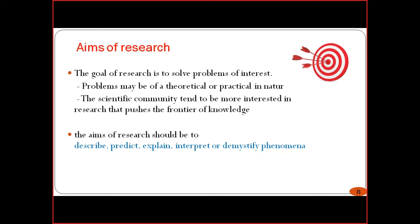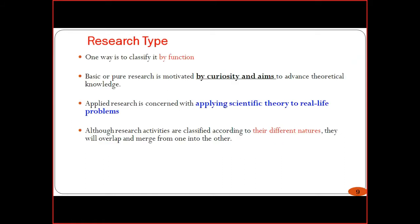Generally, research scholars pursue research to get a degree, complete PhD work, or obtain promotions. Some persons do research lifelong, even after finalizing their aim. What are the research types? One way is to classify by function. Basic or pure research is motivated by curiosity and aims to advance theoretical knowledge. Some research is fundamental, some advanced — we will discuss all types in detail.